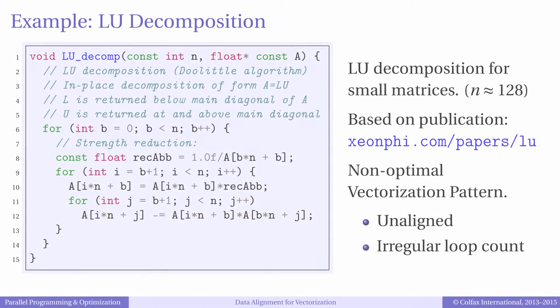We will study the regularization of vectorization pattern using an example application that computes the LU decomposition of a small matrix 128 by 128 using the Doolittle algorithm. LU decomposition represents a non-degenerate matrix A as a product of two matrices, L and U, where L is a lower triangular matrix and U is an upper triangular matrix.